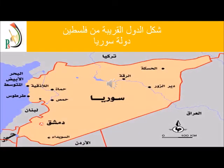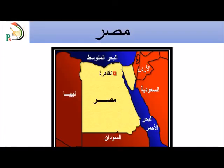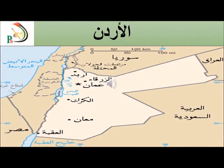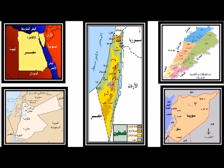تعالوا معي أعزائي الطلاب نشاهد أشكال الدول العربية القريبة من فلسطين: وأولها سوريا، ثم خريطة لبنان، وخريطة مصر، وأخيراً الأردن. إذن أعزائي الطلاب، هل تتشابه أشكال الدول العربية القريبة من فلسطين؟ بالطبع لا، فلكل دولة شكل يميزها عن الدولة الأخرى.